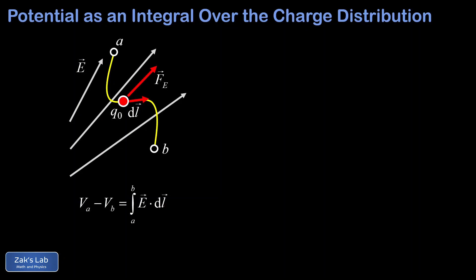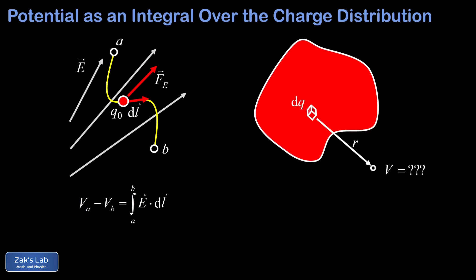In the previous video we introduced the electric potential and we learned how to compute potential difference as a path integral of the electric field. This approach is useful for finding potential differences if we already know the electric field around the charge distribution. In this video we're going to look at how to compute the electric potential of a charge distribution without knowing the electric field.